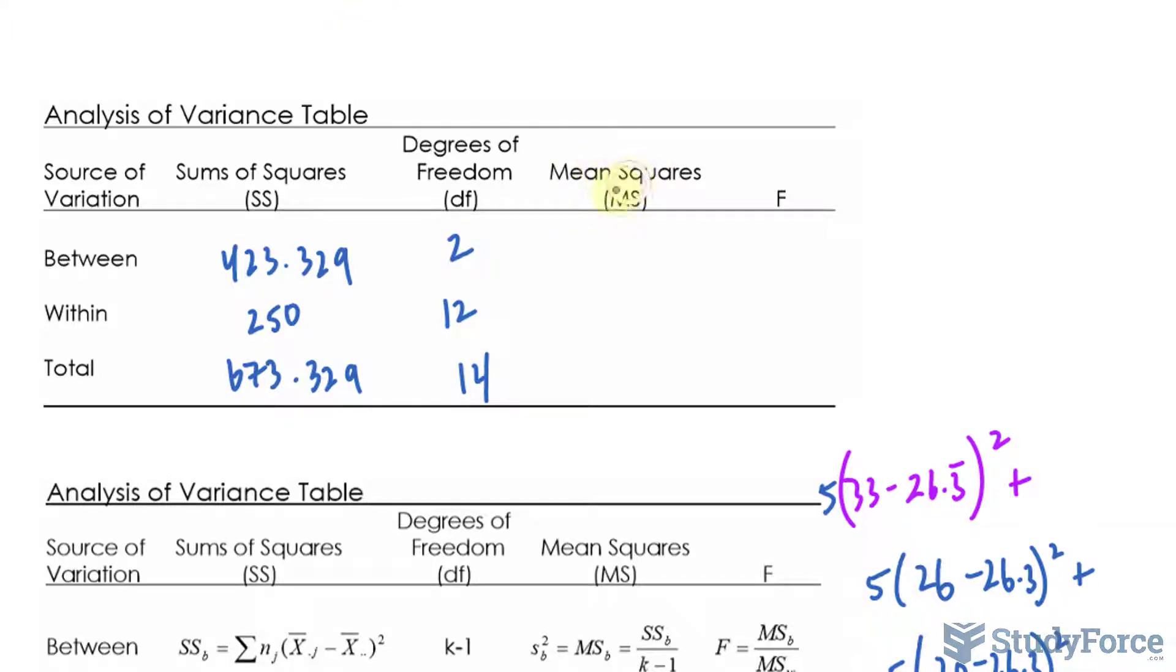So we need to now find the mean square. And that's done by taking this number and dividing it by 2. So I'll write down the mean square for between is 423.329 over 2. The mean square for within is 250 divided by 12. And the answers that we get for both of these, we will use to find our F observed.